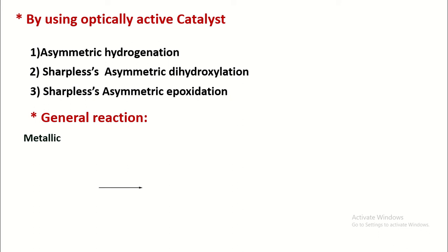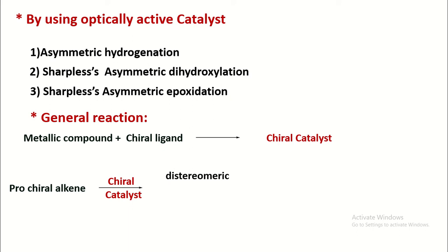For asymmetric hydrogenation, for Sharpless asymmetric dihydroxylation, for Sharpless asymmetric epoxidation. The general reaction for this purpose is the metallic compound reacts with chiral ligand to form chiral catalyst. Then this chiral catalyst acts on the prochiral alkene to form the diastereomeric complex and finally the chiral product.